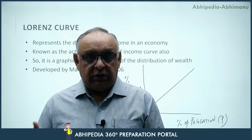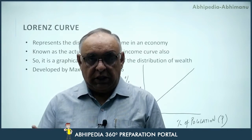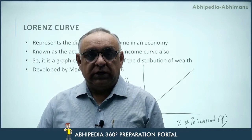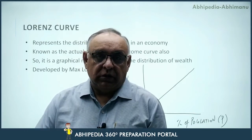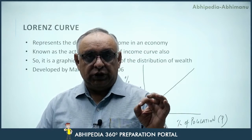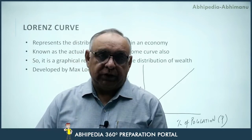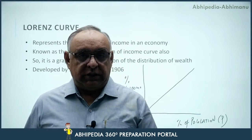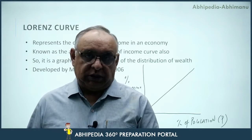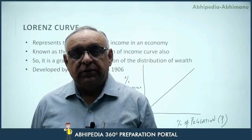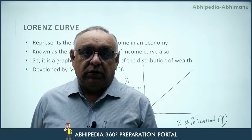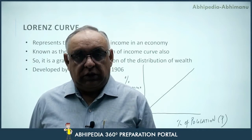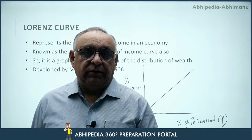However, this 45-degree line is a utopia — because in any society, any economy, any country, it is not possible that if total income is 100 rupees and population is 100, everyone has exactly one rupee each. In reality, some may have 10 rupees, some may have 10 paise, some may have 50 rupees. So in the real world, it is not possible that all individuals are possessing an equal proportion of income and wealth.